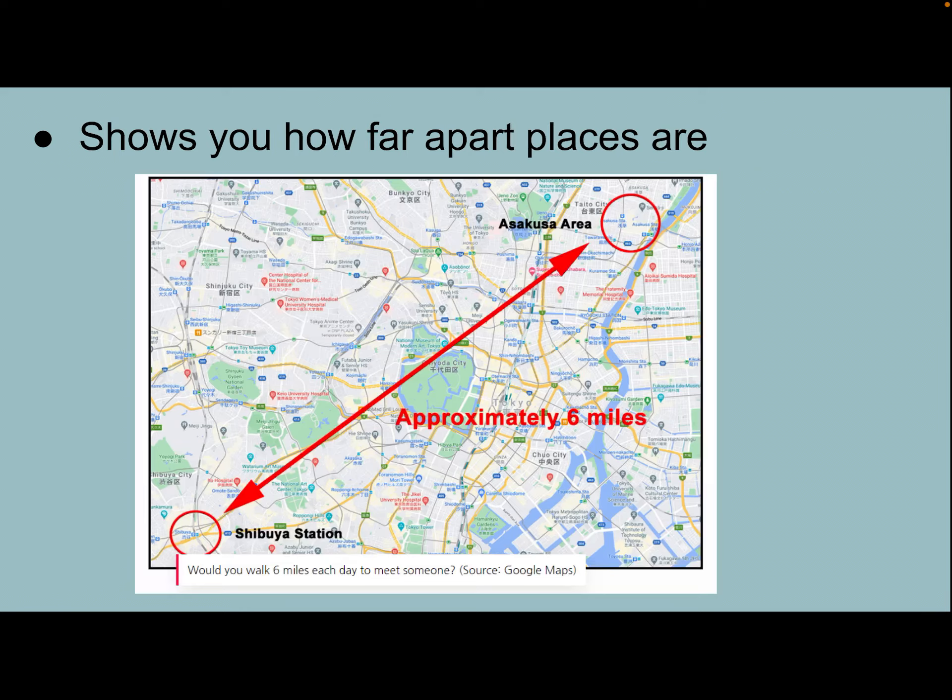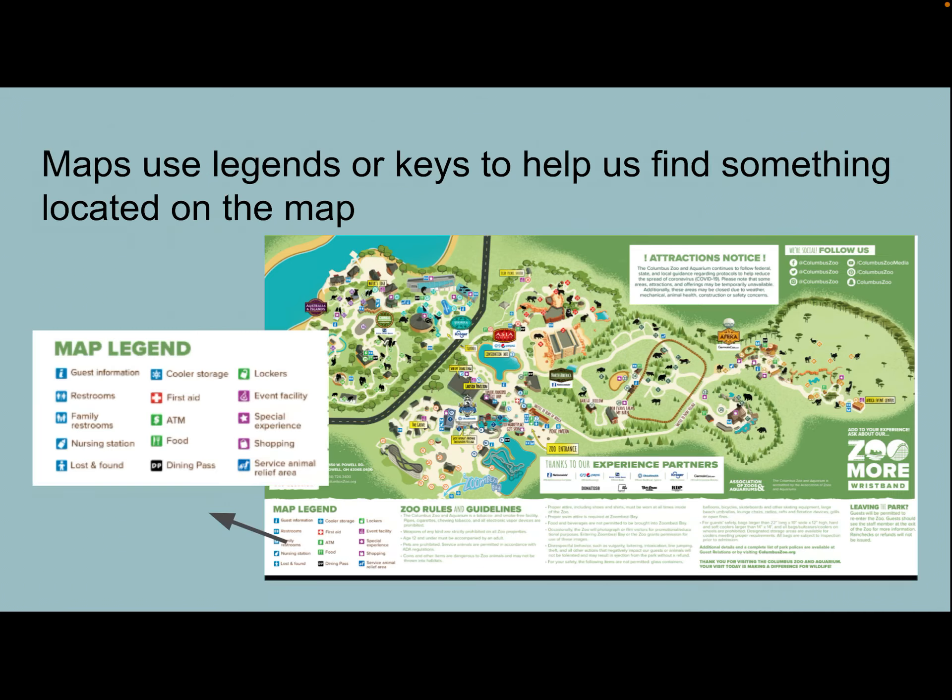In addition, an author might use a map to show how far apart places are. We haven't read this book yet, but it's called Hachiko, the true story of a loyal dog. This map shows me how far Hachiko walked every day to see his owner at a train station, and I can see that was approximately six miles.